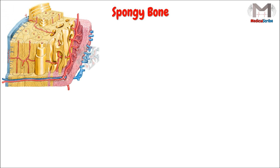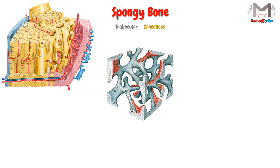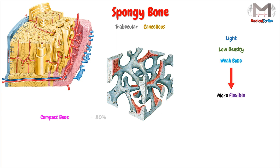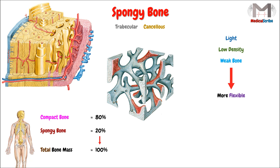The spongy bone, which is also called the trabecular or the cancellous bone, is defined as a light, low density, and weak bone in comparison with the compact bone. These features will make this type more flexible than the compact bone. As we said in the previous video, the compact bone will account for 80% of the bone mass, so this type will make the remaining 20% of the total bone mass in an adult human.